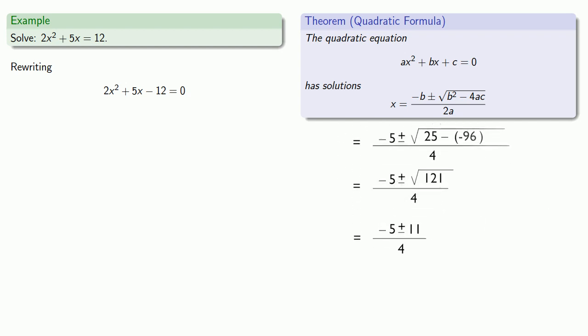Now remember this plus or minus means that we'll either add or we'll subtract. And so that means I'll actually have two solutions here. Minus 5 plus 11 over 4 or minus 5 minus 11 over 4. And we'll simplify those a little bit.